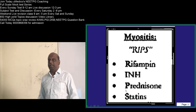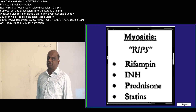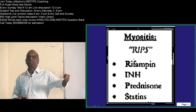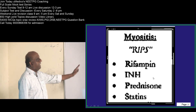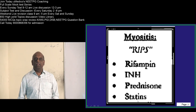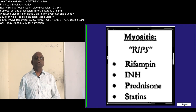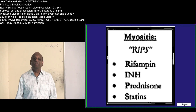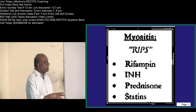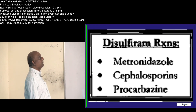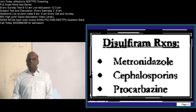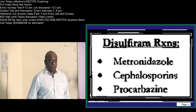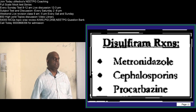Drugs that cause myositis — asked many times. Remember 'RIPS the muscle': Rifampicin, INH, Prednisolone, Statins. After statins, patients may say they are unable to get up from a squatting position — myositis could be responsible. Immediately check serum CPK levels to confirm myositis.